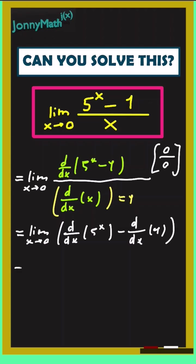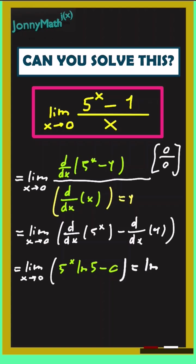So this equals the limit as x goes to 0 of the derivative of 5^x, which is 5^x times the natural log of 5. Minus the derivative of 1 is just 0, so this equals the natural log of 5.